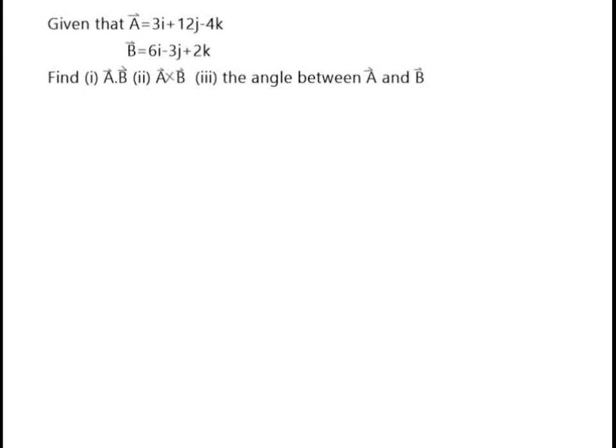As it regards to today's tutorial, we shall be looking at a problem under vector. This problem will help us understand some aspects of vector. The problem reads, given that vector A is equal to 3i plus 12j minus 4k and vector B to be 6i minus 3j plus 2k.